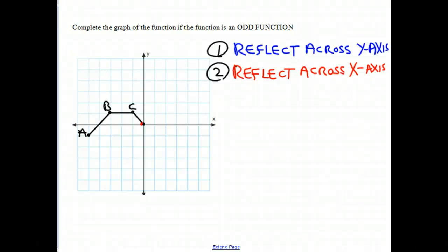Today we're going to complete the graph of a function if the function is an odd function. We're given a graph that you see on the board, and we're saying it's an odd function, but for it to be an odd function, there must be some more of it missing.